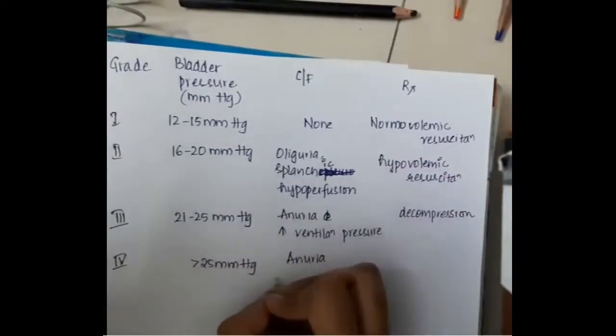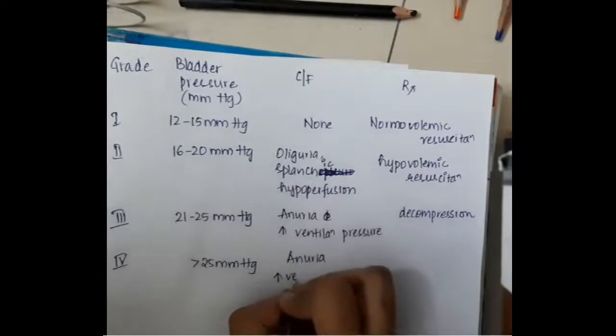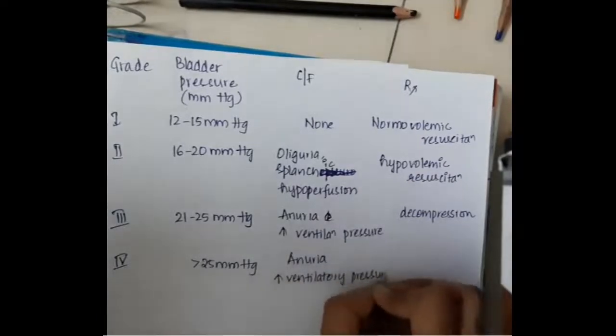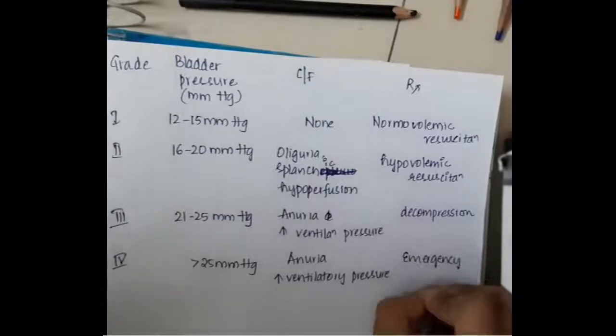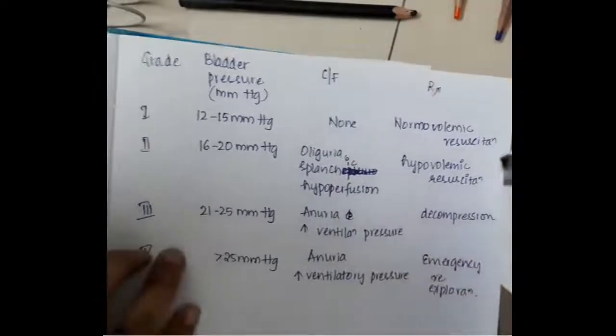In stage 4, the bladder pressure is more than 25 millimeters of mercury and this shows anuria and increased ventilatory pressure, and the treatment is emergency re-exploration is done.